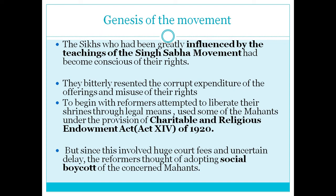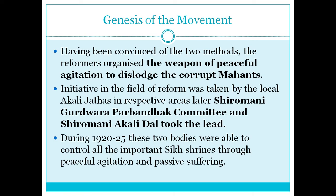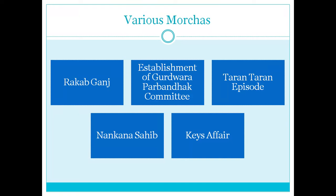The reformers did not start the morchas right away. First they tried legal means under the provisions of the Charitable and Religious Endowment Act, then they tried social boycott — neither method succeeded. So they started the weapon of peaceful agitation. In this video we covered two episodes: Rakab Ganj and the establishment of the SGPC.